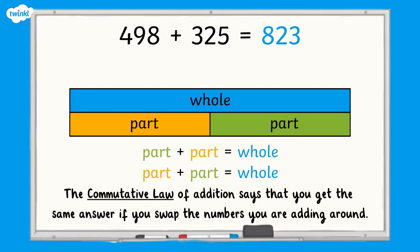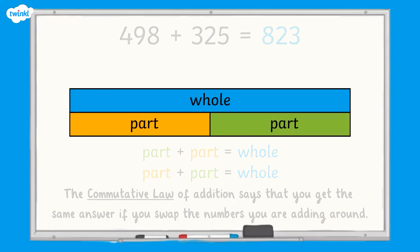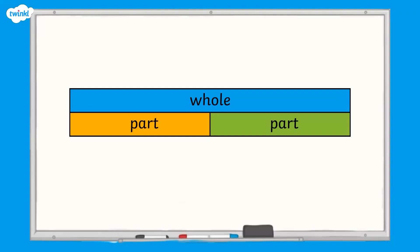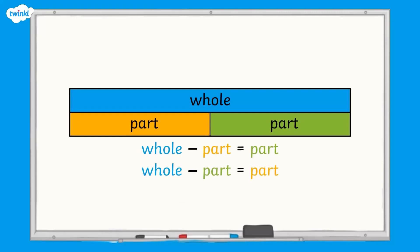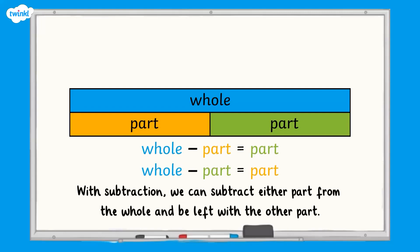Remember, addition is commutative, which means that the parts can be added in any order. The whole subtract one of the parts leaves the other part, so whole subtract part equals part. With subtraction, we can subtract either part from the whole and be left with the other part.